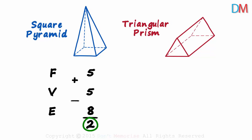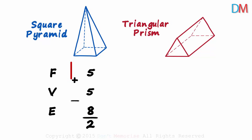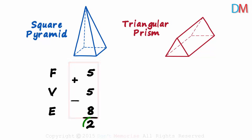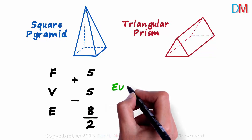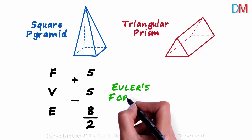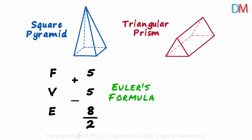It worked for the square pyramid too — F plus V minus E gives us two. This is called Euler's formula. For any straight face solid, F plus V minus E will always give us two.